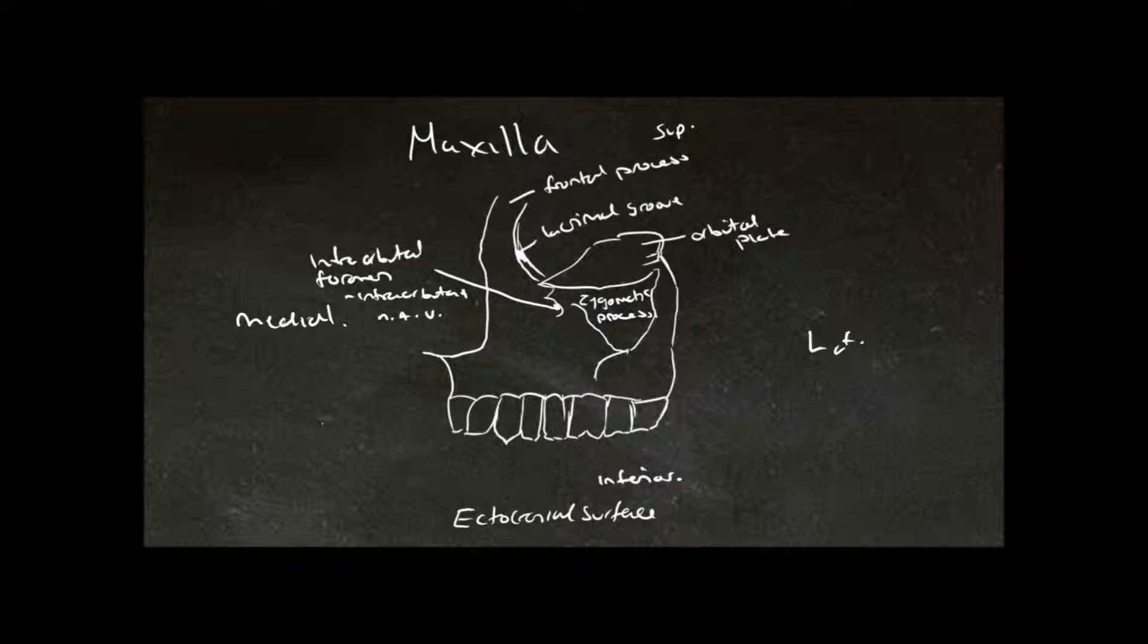We have the body of the maxilla. We have an elevation over the canine tooth, and this is called the canine eminence. And along here, where the teeth enter the maxilla, we call this the alveolar process.